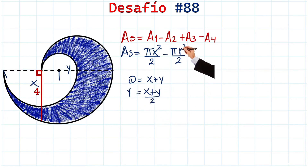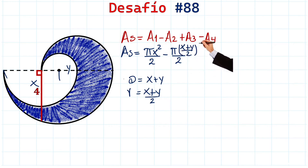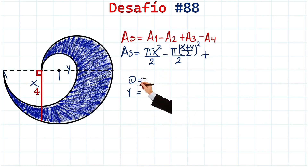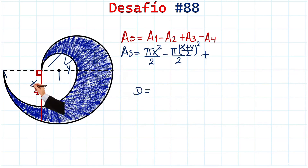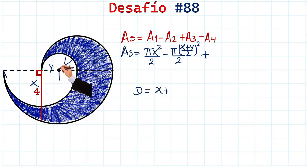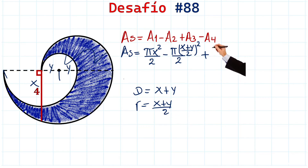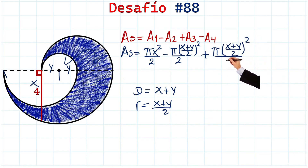So we replace that here with (x + y) / 2, all squared. Plus Area 3 — the diameter of this semicircle goes from here to here, which is x because it's the radius of the large semicircle, plus y because it's the radius of the small semicircle. So again x plus y, and the radius equals (x + y) / 2. We have π multiplied by ((x + y) / 2) squared, all over 2, because we are talking about a semicircle.